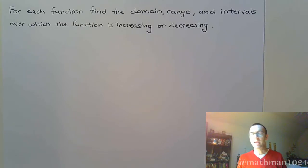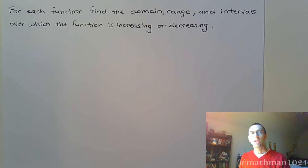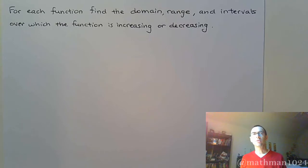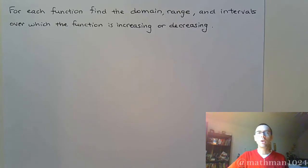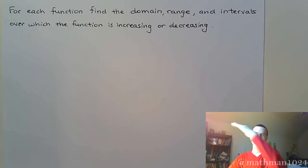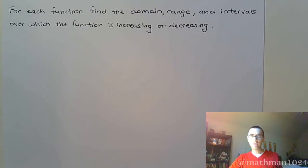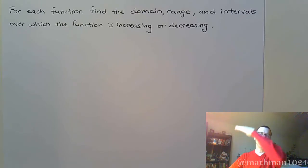Now we're going to work through some examples. In each of these functions I want you to find the domain, the range, and then I want you to talk about the intervals over which the function is increasing — that means it's going up from left to right — or the intervals over which it is decreasing, where it's going down from left to right. Increasing is going up, decreasing is going down.